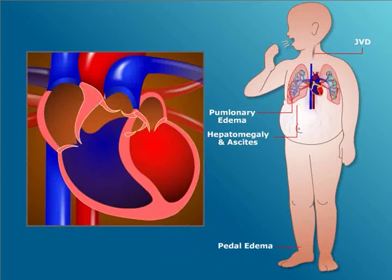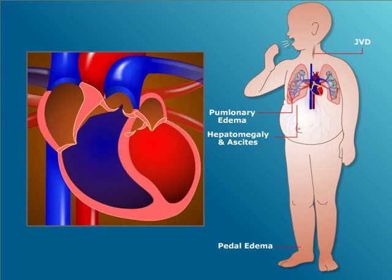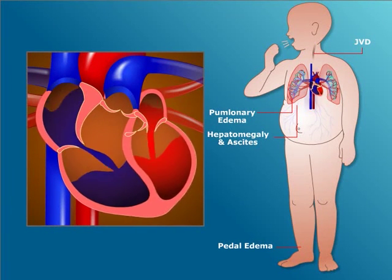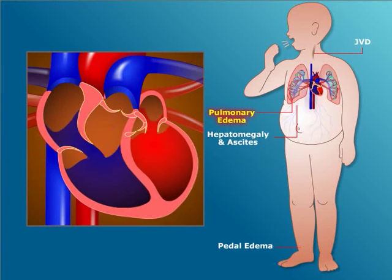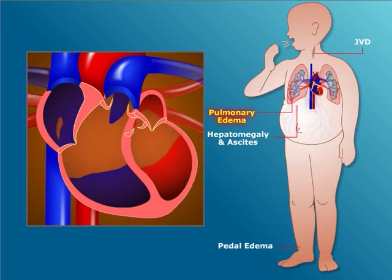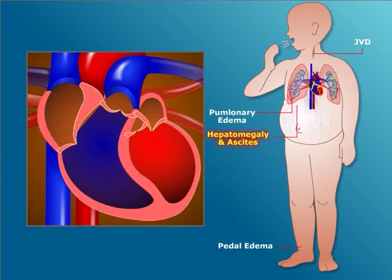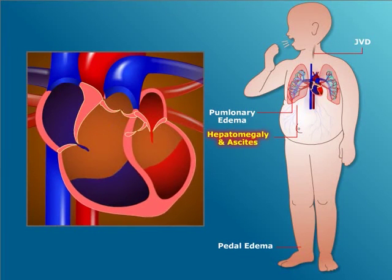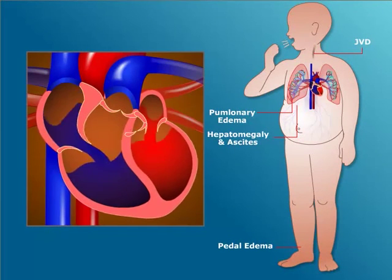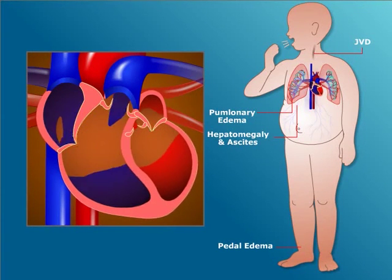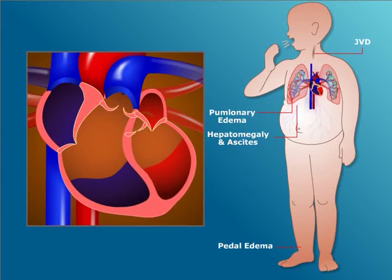Left ventricular failure usually presents with shortness of breath, orthopnea, and pulmonary edema. Whereas right ventricular failure presents with JVD, hepatomegaly, ascites, and peripheral edema. Since both ventricles are usually affected, a combination of symptoms of both left and right heart failure will be seen.